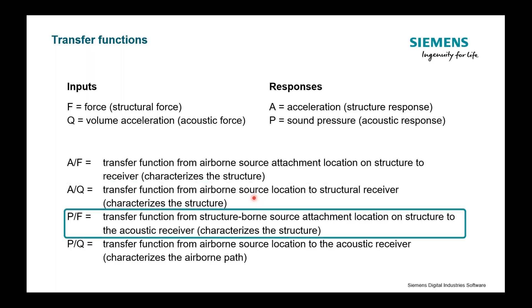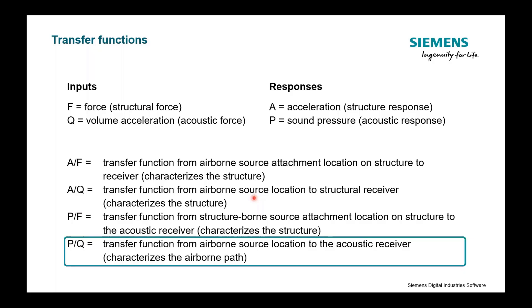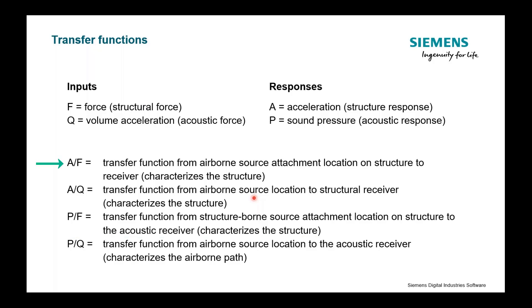I also have P over F, which is pressure per unit force. This is very common in transfer path analysis — for example, working on an automobile and wanting to understand the different paths that energy takes to the driver's ear. My P is the driver's ear location with a microphone, and I could essentially hit the structure at different places and generate a P over F. Similarly, there's P over Q, measuring acoustic response from an acoustic force — fully airborne. So: A over F is structure-borne, A over Q is airborne/structure-borne, P over F is airborne/structure-borne, and P over Q is simply airborne. We'll see there's a special relationship between P over F and A over Q.